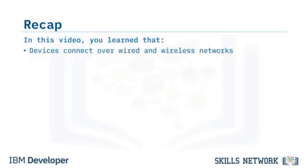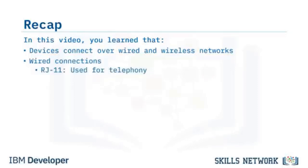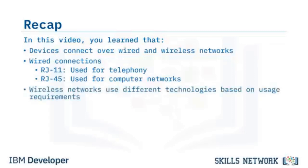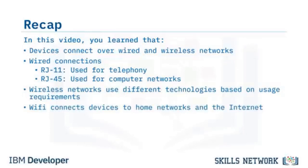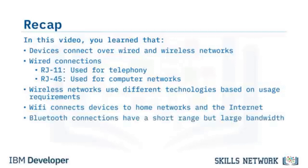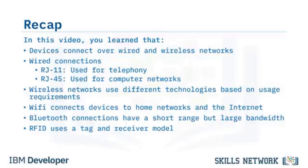In this video, you learned that devices connect with each other using wired and wireless networks. The main types of wired connectors are the RJ11, used in telephony, and the RJ45, used to connect computers and related peripherals. Wi-Fi connects devices to home networks and the Internet. Bluetooth has a short range but transmits large streams of data. RFID uses a tag and receiver model to collect identifying information. NFC is an evolution of RFID and operates over extremely short distances, often requiring physical contact between devices to transmit data.